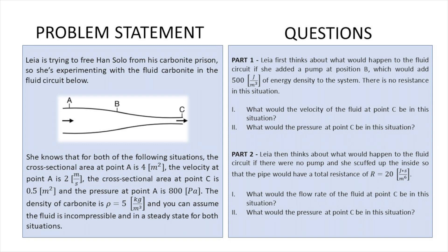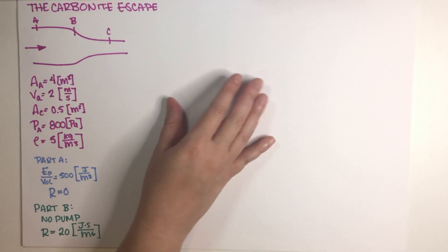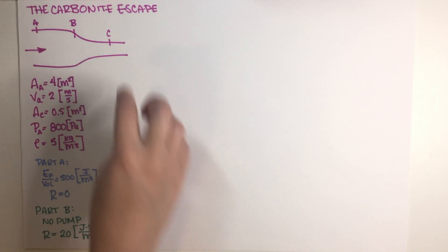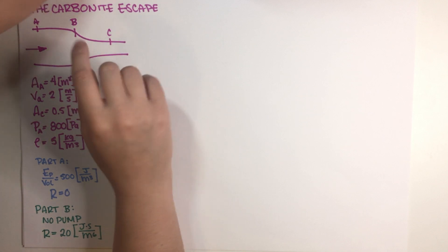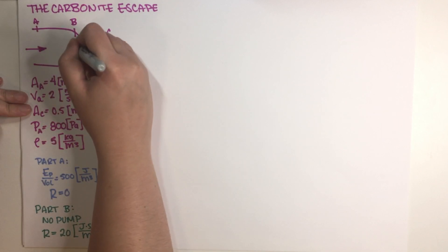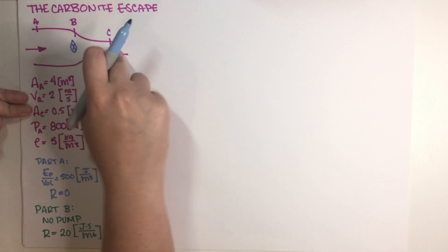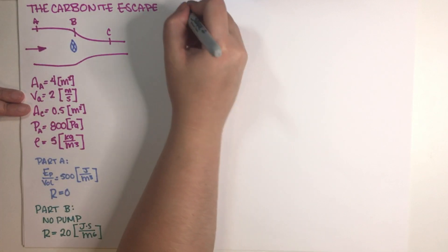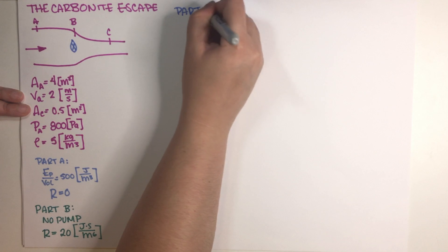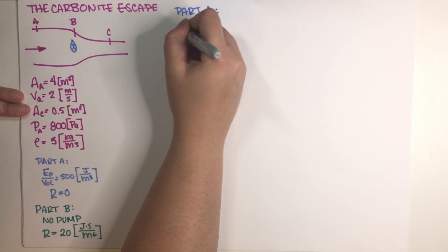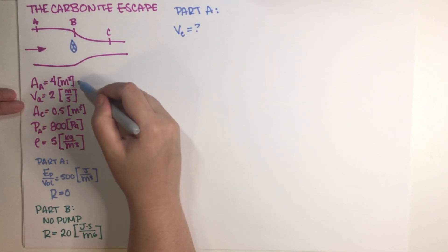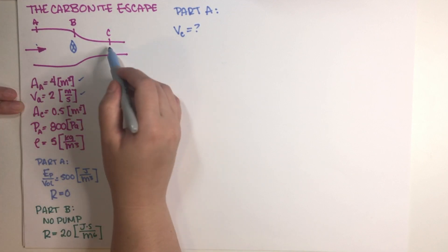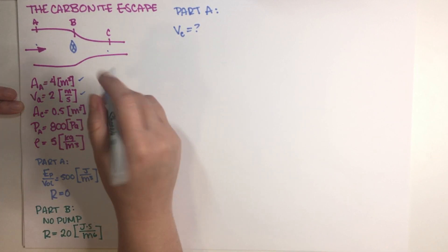As you can see, I have everything written down here in my notes. This is the Carbonite Escape, and for Part A we are basically adding a pump here in the middle, between points A and C. And the first thing that we have to figure out is what is the velocity at point C.